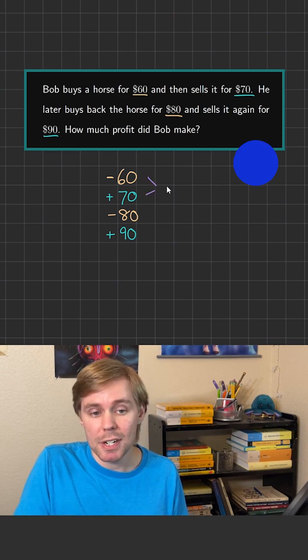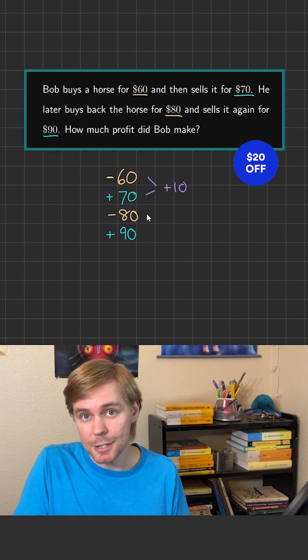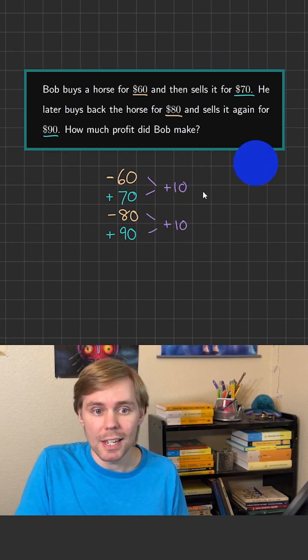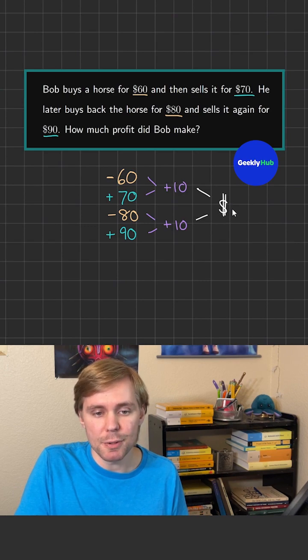Negative $60 plus $70 is going to be a positive $10. Negative $80 plus $90 is also a positive $10. And then $10 plus $10 is clearly going to be $20.